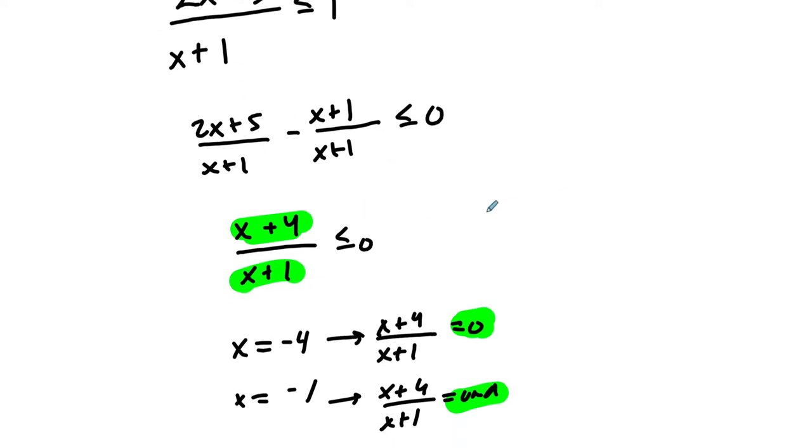So then what I would do is evaluate my signs around those points. At negative 4, I'm going to put a closed circle. At negative 1, when it's undefined, I put an open circle. This is my number line here, where solid and dashed lines remind me when I could use those values.